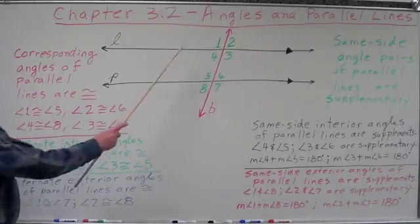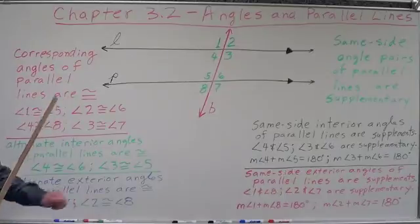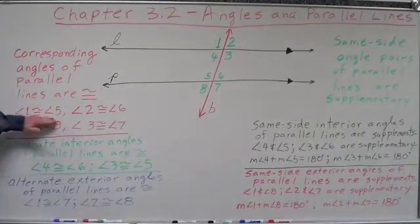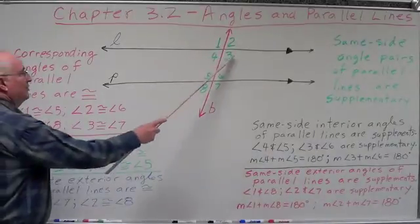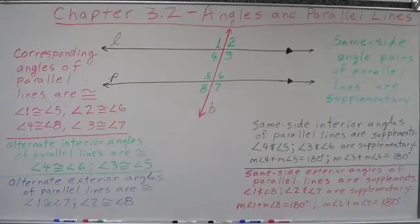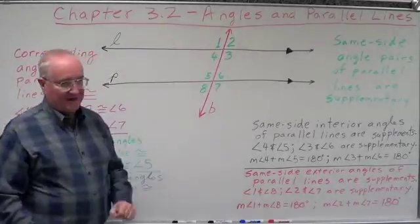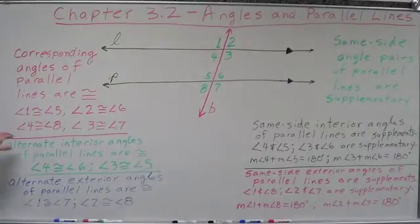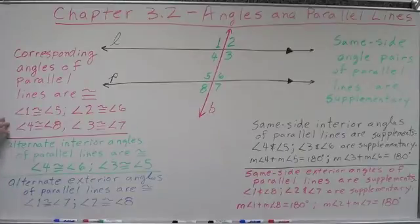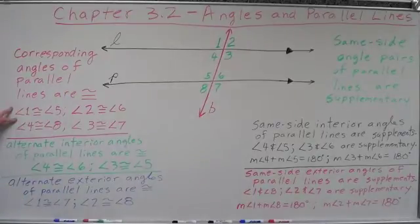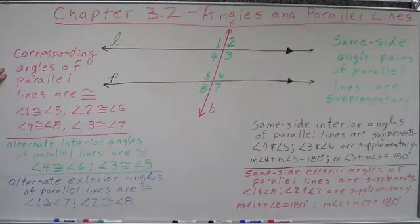Corresponding angles of parallel lines are congruent. Corresponding means there's one exterior and one interior angle on the same side of the transversal. Angles one and five are congruent. Angles two and six are congruent. Angles four and eight are congruent. And angles three and seven are congruent. This is known as the corresponding angle postulate. That means the measure of angle one equals the measure of angle five, the measure of angle two equals the measure of angle six, the measure of angle four equals the measure of angle eight, and the measure of angle three equals the measure of angle seven — by the definition of congruent angles.